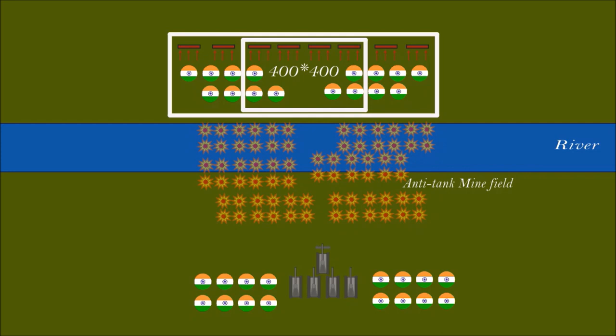This secure zone, generally 400m by 400m or 400m by 800m, is called a bridgehead.